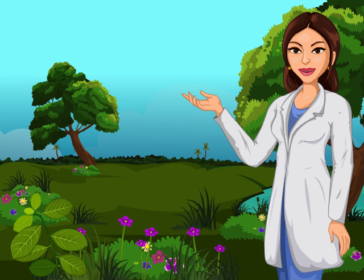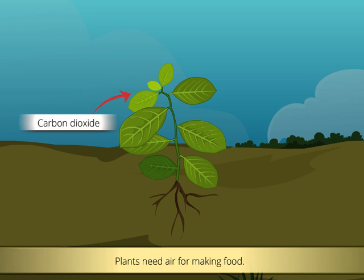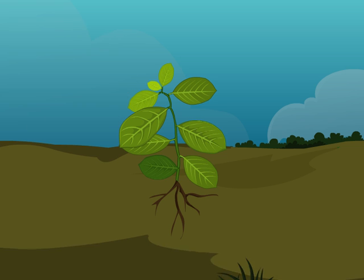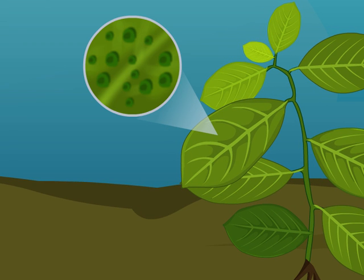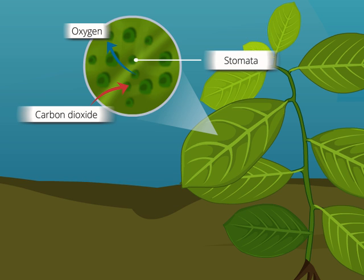Friends, do you know that plants also need air? They make their food with the help of carbon dioxide gas present in the air. Plants also release air in the form of oxygen gas. But how does air enter the plants? The leaves of the plants have very minute pores called stomata. Air moves in and out of the plants through these pores.